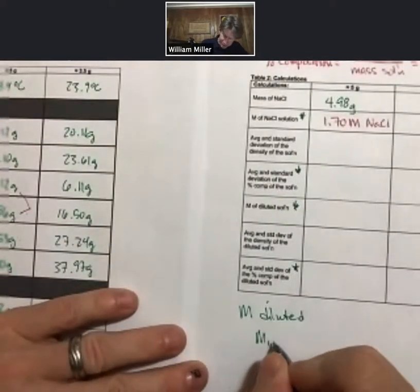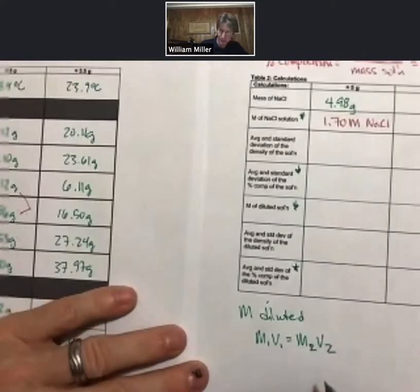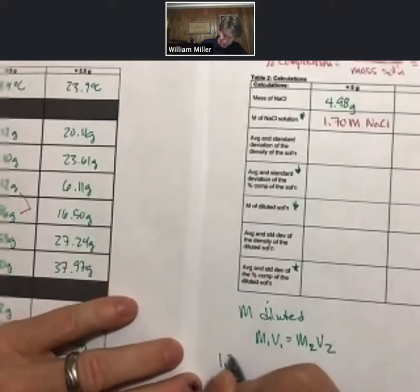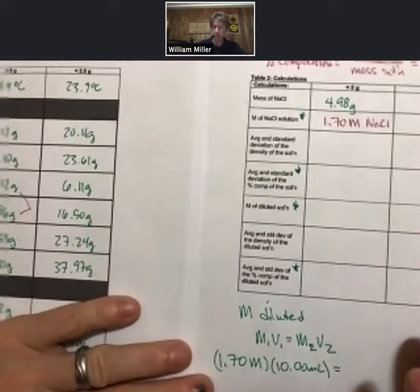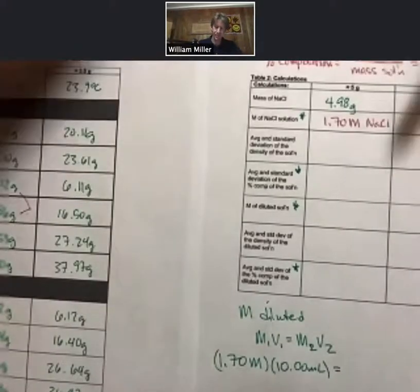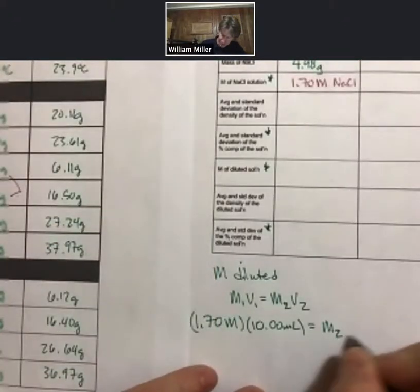So it's a dilution. M1 V1 equals M2 V2. We know that we started with 1.7 molar. We took 10.00 milliliters of that. Then we don't know M2, but we ended up with 50 milliliters.